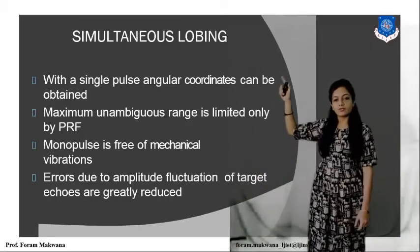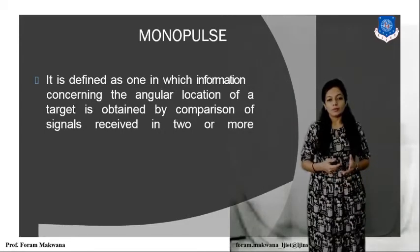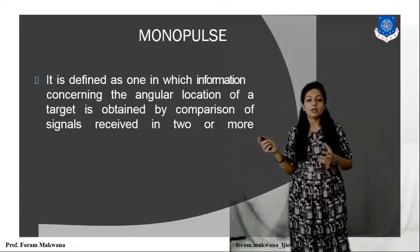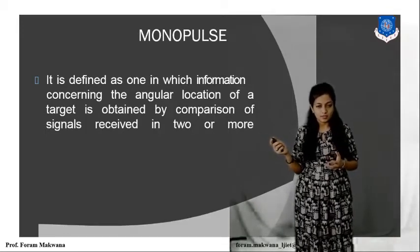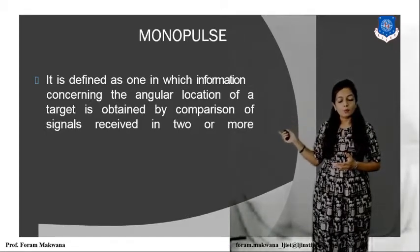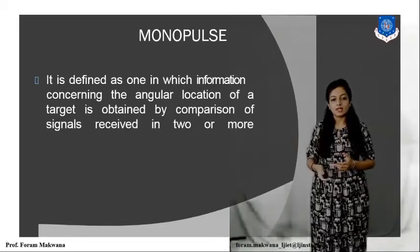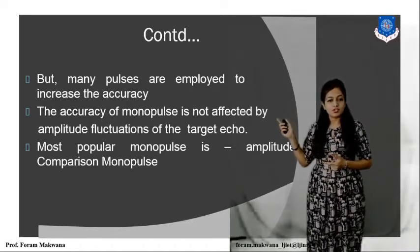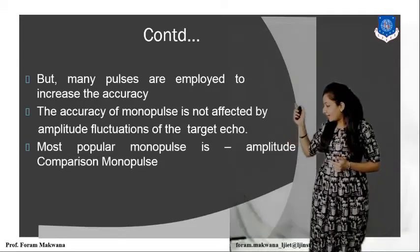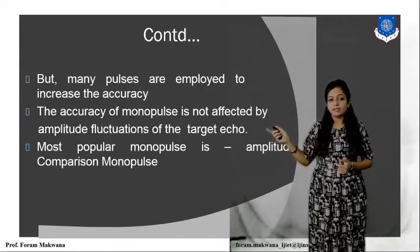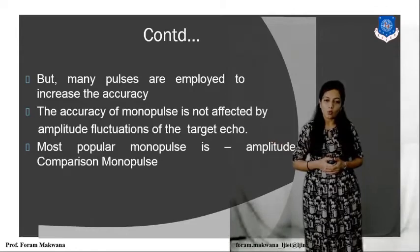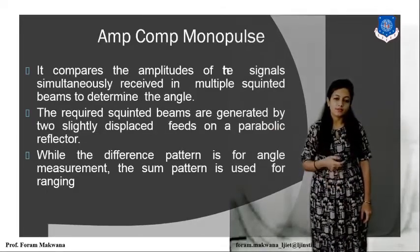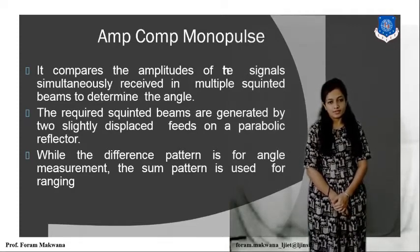Both these errors are nullified with the help of simultaneous lobing. Monopulse is defined as the technique in which information concerning the angular location of a target is obtained by comparison of signals received in a single pulse. The most popular monopulse is the amplitude comparison monopulse. Let us focus on amplitude comparison monopulse.